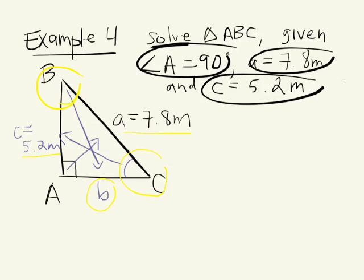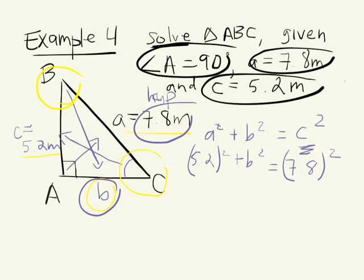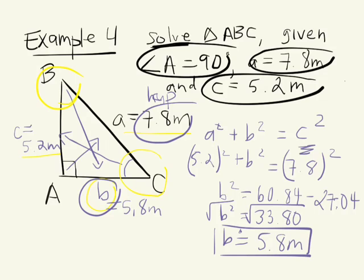Because this is a right angle triangle and we know two out of three side lengths, we can use the Pythagorean theorem: A squared plus B squared equals C squared. The hypotenuse is 7.8. So we have 5.2 squared plus B squared equals 7.8 squared. Simplifying and solving for B, we find that B is equal to 5.8 meters.